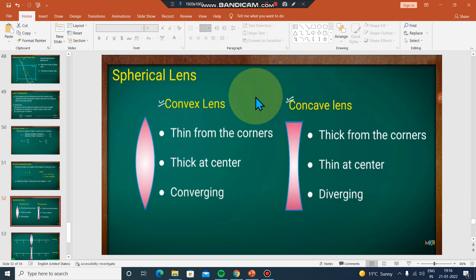Okay, now we have to talk about spherical lens. Spherical lens is a curved lens, and we have two types: convex lens and concave lens. Convex lens is different from concave lens.